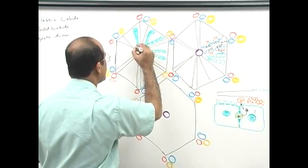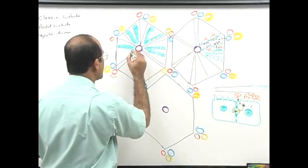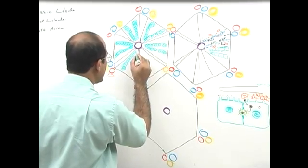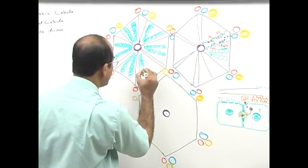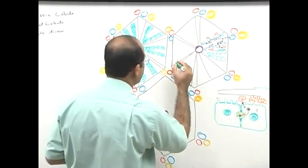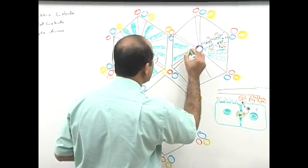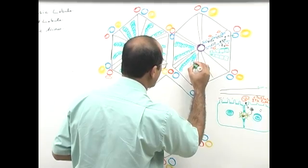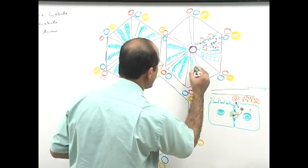Hepatocytes are large cells with specialized surfaces. One surface faces the space of Disse and deals with substances coming from the blood; the other surface forms the bile canaliculi. These cells are very rich in lysosomes, peroxisomes, and mitochondria.